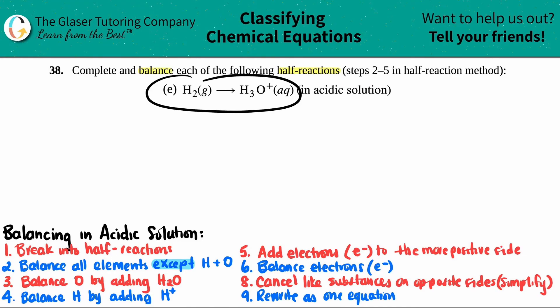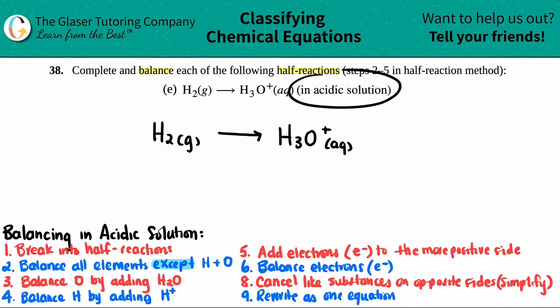And then we have letter E. So we have to balance H2 gas yields, and that's going to make H3O plus, and that's aqueous. Okay. And we have to do this in acidic solution.